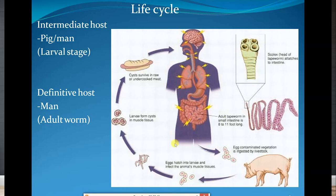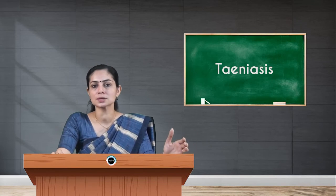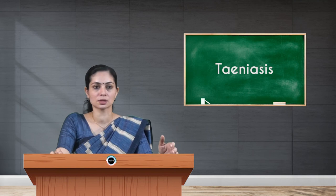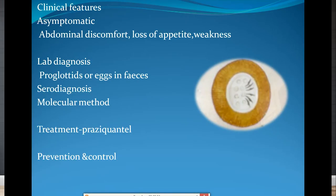In intestinal taeniasis, patients are usually asymptomatic, but some complain of abdominal discomfort, loss of appetite, and weakness. Laboratory diagnosis is the same as for other Taenia species: stool examination with microscopy showing proglottids and eggs. Sero-diagnosis is done by detection of antigen or antibody, and molecular methods include PCR. Treatment and prevention are the same for intestinal taeniasis.